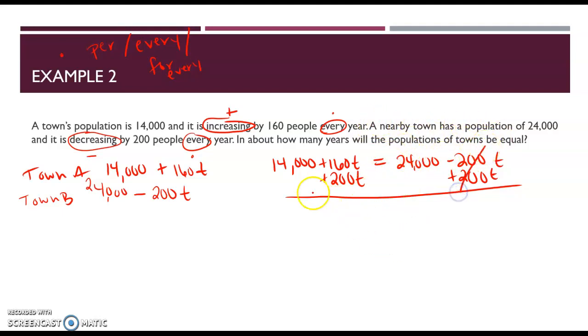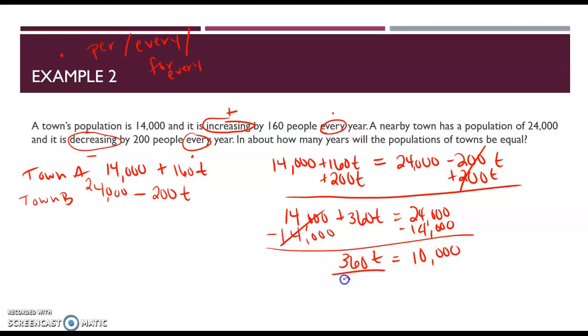So here we have 14,000 plus 360T equals 24,000. And then we're going to subtract the 14,000. And so we have 360T equals 10,000.